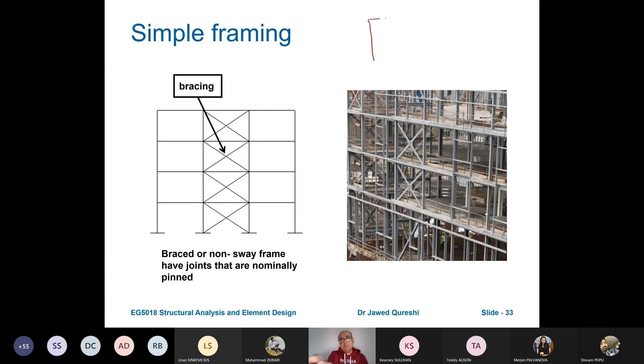The example of simple frame is that we have a frame. The joints are pinned. Moments are not transferred and then we will have cross bracing. Others are moment frames where joints are fixed. This is moment frame or sway frame. This is non-sway frame or pin frame.